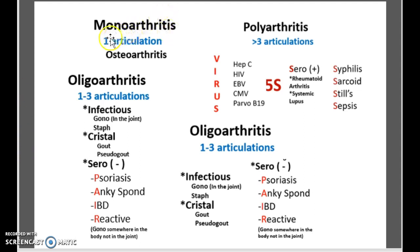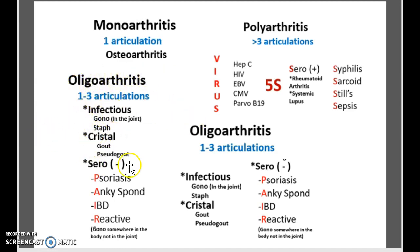If it is one articulation, then you're actually dealing with monoarthritis. If there are one to three, then you're dealing with oligoarthritis — and as you can see here, it's infectious, crystal, and seronegative. If you are dealing with more than three, then you are dealing with polyarthritis.